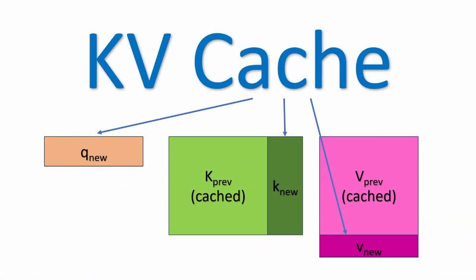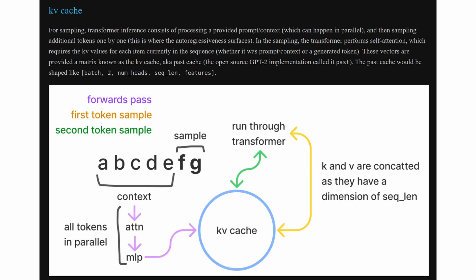The original problem was that the performance of language model serving is bottlenecked by memory. In the autoregressive decoding process, all the input tokens to the LLM produce their attention key and value tensors, and these tensors are kept in GPU memory to generate text tokens. These cached key and value tensors are often referred to as KV cache, and the growing KV cache demand with increasing sequence length has made LLM inferencing a memory-bound problem, significantly constraining the system throughput.